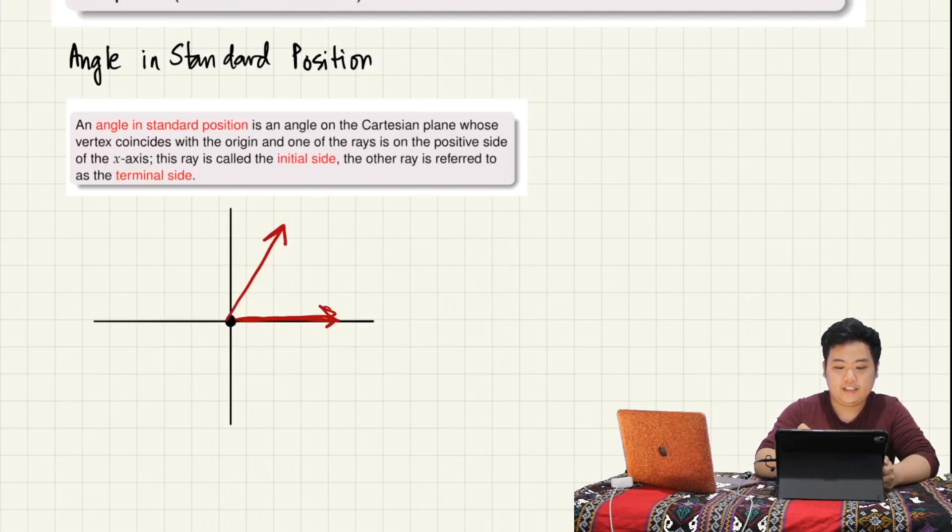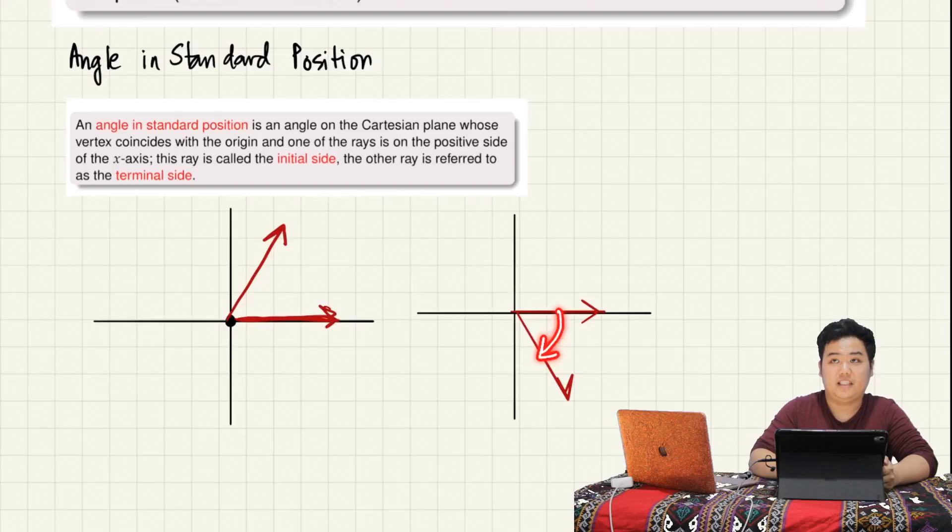Yung convention natin diyan is kapag counterclockwise yung ikot ng angle, positive yung angle. Kapag clockwise naman yung ikot ng angle, let's say started from here, in this case kung clockwise naman siya, negative yung angle. Again, counterclockwise positive, clockwise negative.